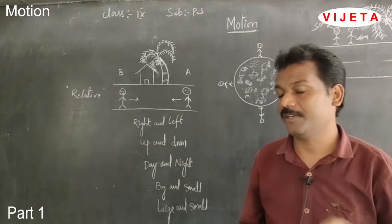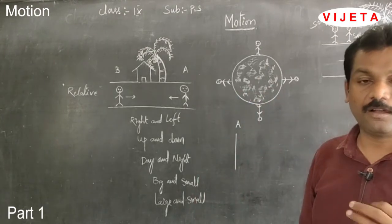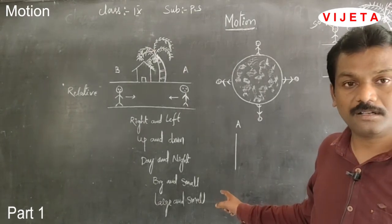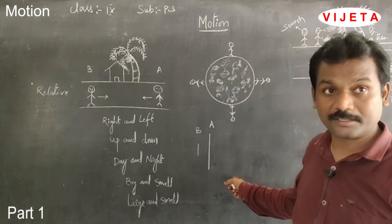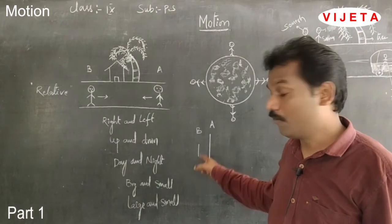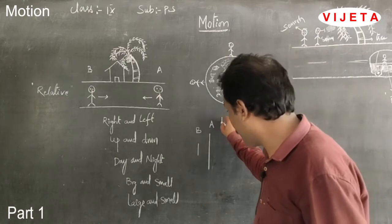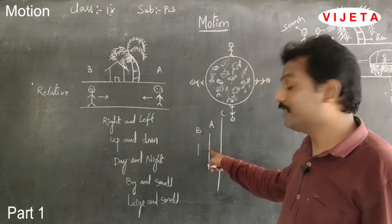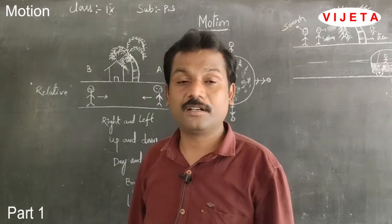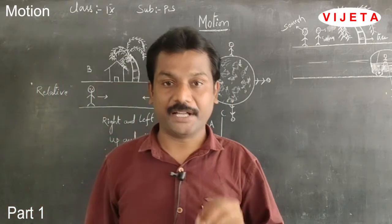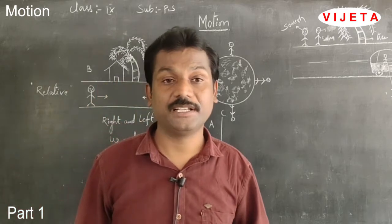For example, consider a line A. Can you describe whether it is long or short? We cannot decide. But when you draw another line B, then A is longer than B. When you draw one more line C, then A is shorter than C. In order to describe anything, we need a comparison — that means a point of observation — based on which only we can decide.